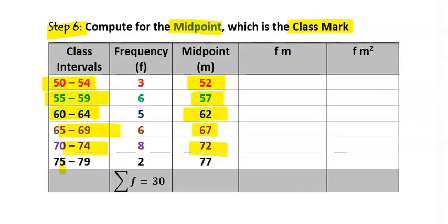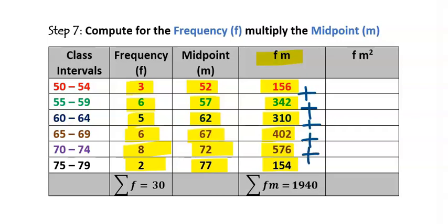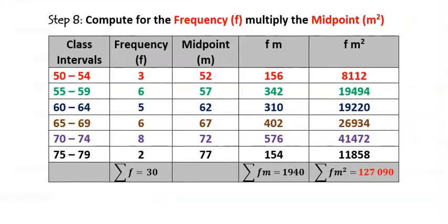Step seven: compute frequency times midpoint (fm). In the first row, 3 × 52 = 156. Next, 6 × 57 = 342. Then 5 × 62 = 310. Adding all fm values: 156 + 342 + 310 + 402 + 576 + 154 gives a total of 1940.